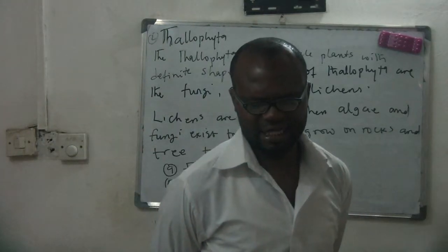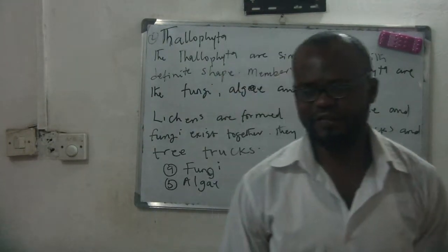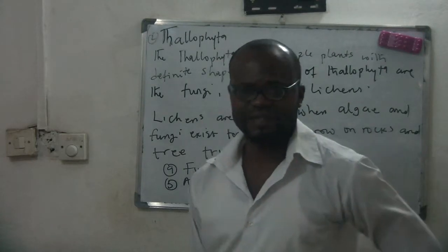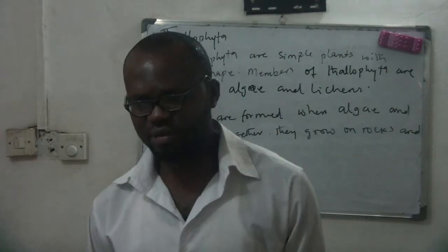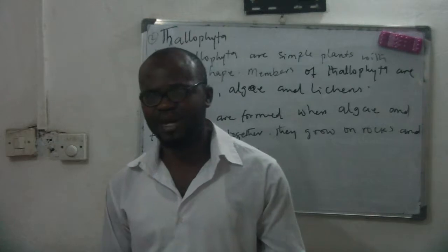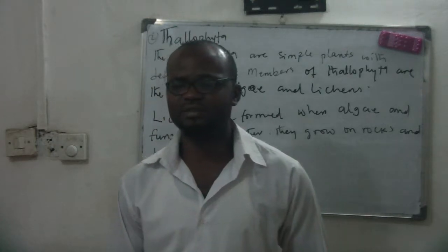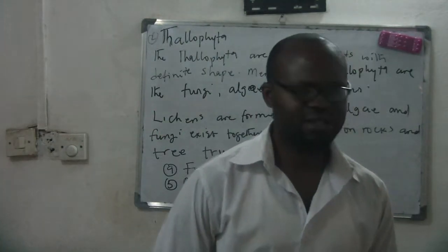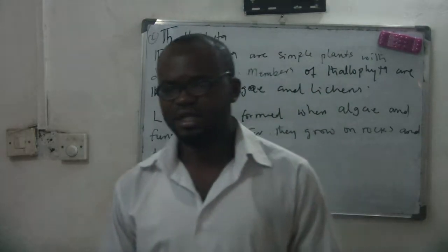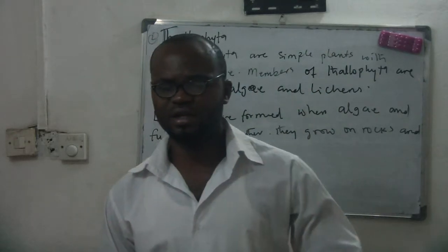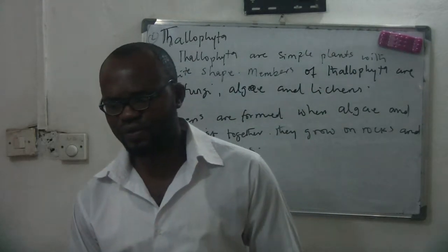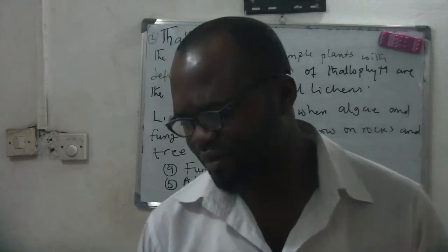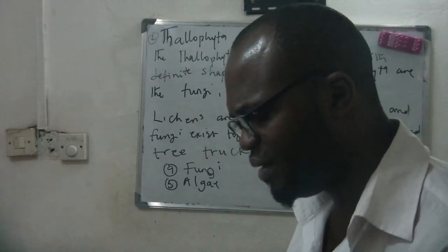We learned about the classification of living things. We said that living things are classified into two major kingdoms — the plant kingdom and the animal kingdom. Then we went further to talk about the phylum.